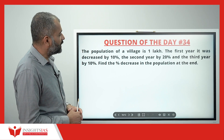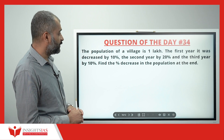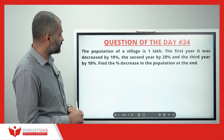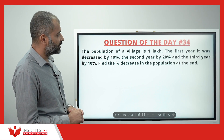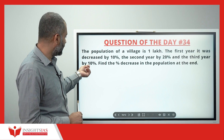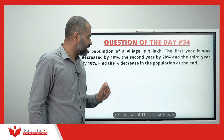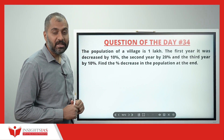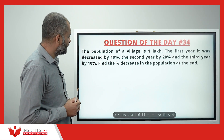The population of a village is 1 lakh. The first year it was decreased by 10%, the second year it was decreased by 20%, and the third year by 10%. Find the percentage decrease in the population at the end.